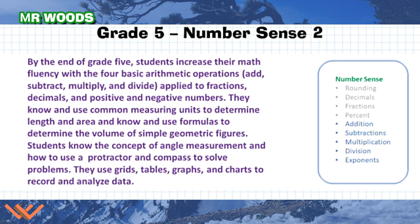By the end of grade five, students increase their math fluency with the four basic arithmetic operations: add, subtract, multiply, and divide, applied to fractions, decimals, and positive and negative numbers. They know and use common measuring units to determine length and area, and know and use formulas to determine the volume of simple geometric figures. Students know the concept of angle measurement and how to use a protractor and compass. They use grids, tables, graphs, and charts to record and analyze data.